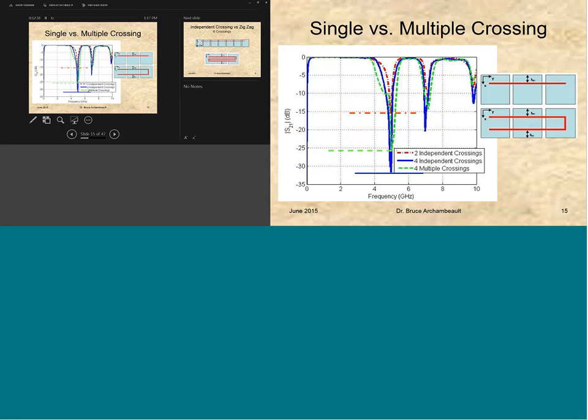And if we just do two independent crossings, we get the red dashed line for a filter here. You see that the depth of the notch is about 15 dB. If we do four independent crossings, the depth of the notch is more than 30 dB. But if we do four multiple crossings, we're zigzagging back and forth like that picture is showing on the lower right, we're still getting 25 dB. So this is a pretty good filter here for pretty good performance and not having to have as many of those patches by re-using the same patch as a zigzag.